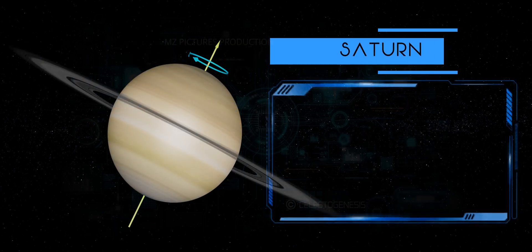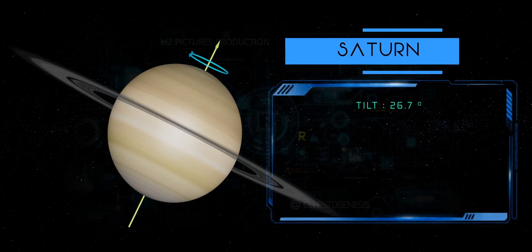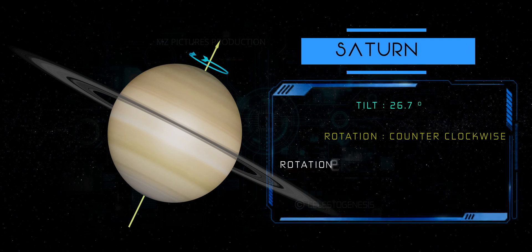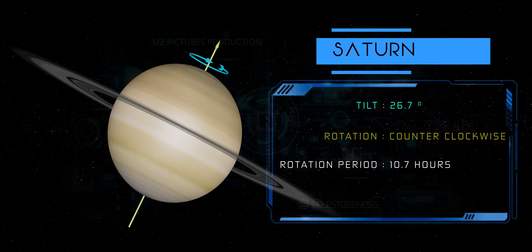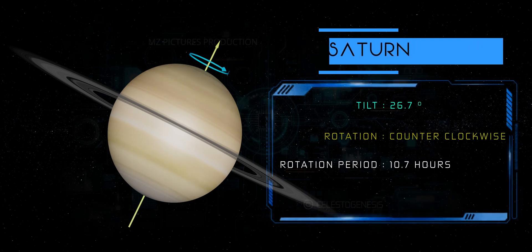Saturn. Saturn also rotates counterclockwise, prograde, and takes about 10.7 hours to complete one rotation, making it another rapidly rotating planet.